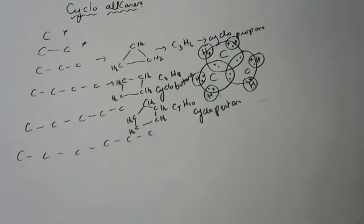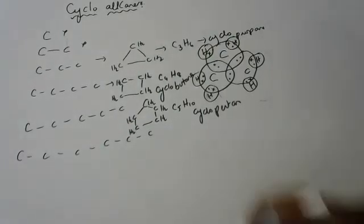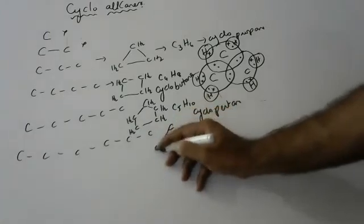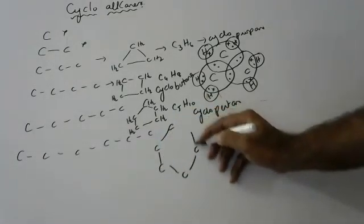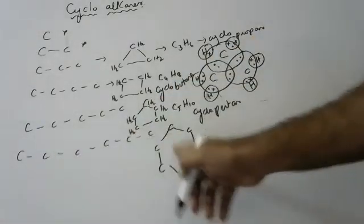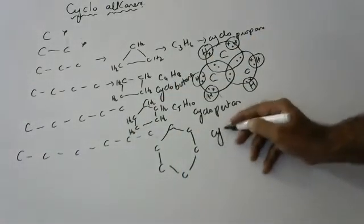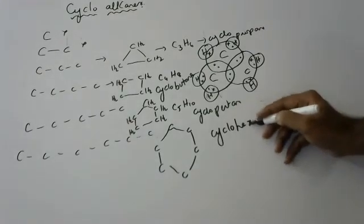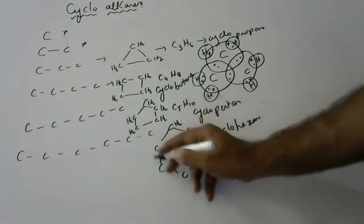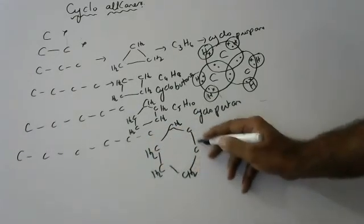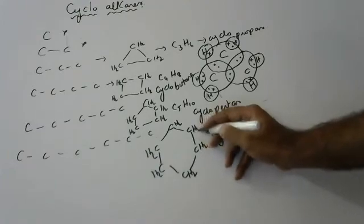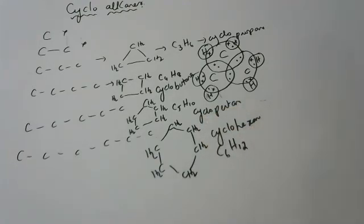The normal hexane, children — if you close it, you will get cyclohexane. Cyclohexane has 1, 2, 3, 4, 5, 6 carbons — close it. Normal hexane, if you close it, becomes cyclohexane. Each carbon has two bonds over two hydrogens, giving the formula C6H12. This is called cyclohexane.